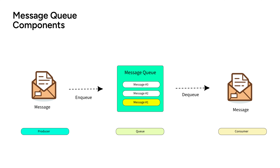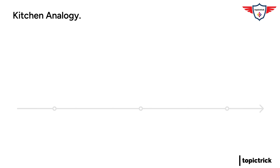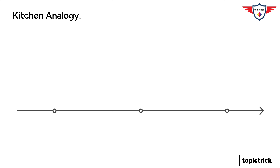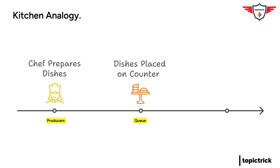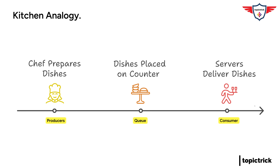Let's use an analogy to really drive it home. Imagine a busy restaurant kitchen. The chefs in the kitchen — those are our producers — they're cooking up all the delicious dishes, which are basically our messages. Then you have the counter where the finished dishes are placed. That's our queue: it's holding all the messages until they're ready to be delivered. And the servers are the consumers — they pick up the dishes from the counter and deliver them to the hungry customers.